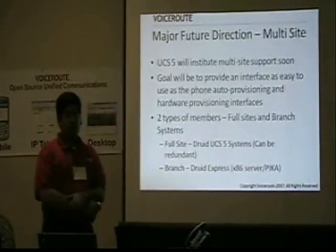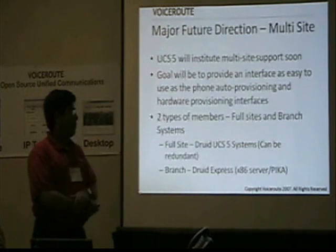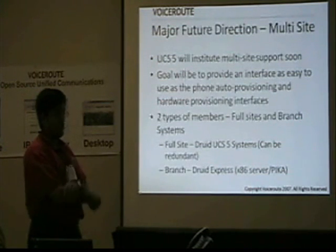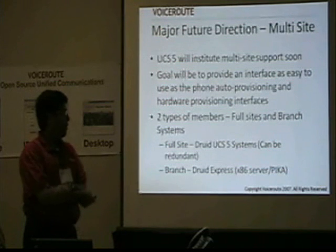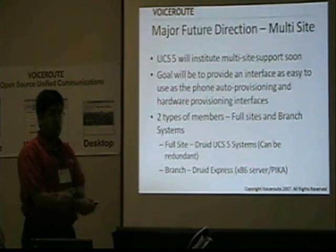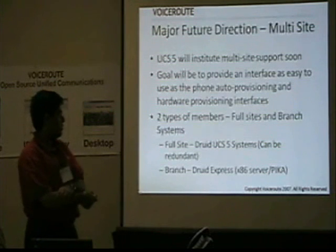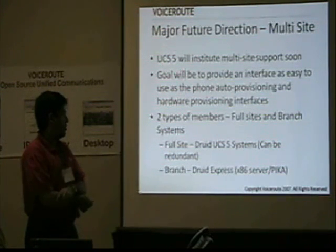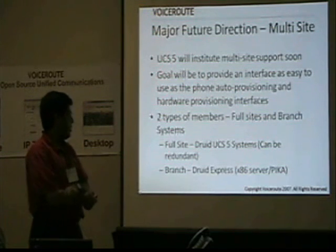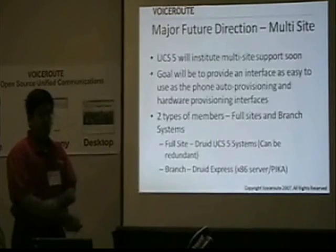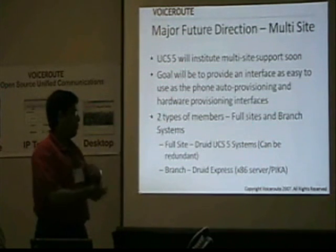Our next major future direction — and this will be in UCS 5 — will be multi-site support. The goal will be to provide an interface as easy to use as the phone auto-provisioning hardware interface, making it very easy to add multiple offices. We have two types of members in these server groups: full sites and branch systems. A full site is basically a standard Druid UCS 5 system with LDAP and all those components. Even individually, those sites can be redundant — you can have multiple servers within a site.